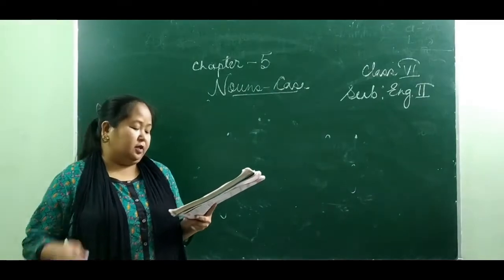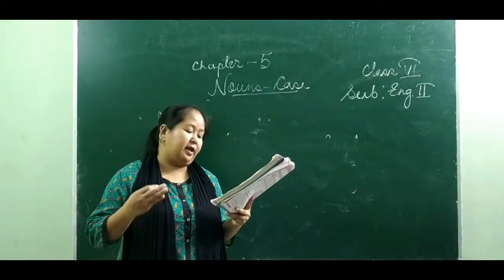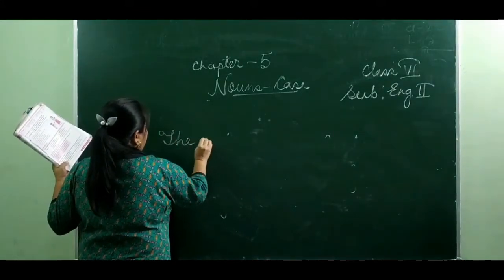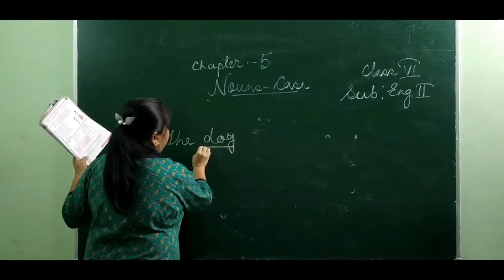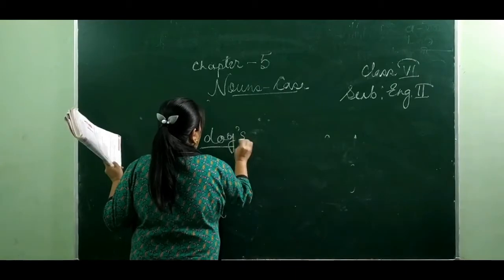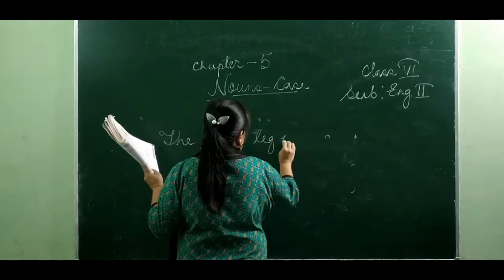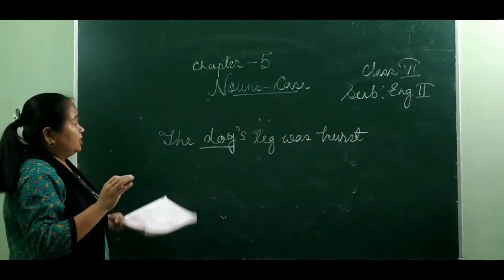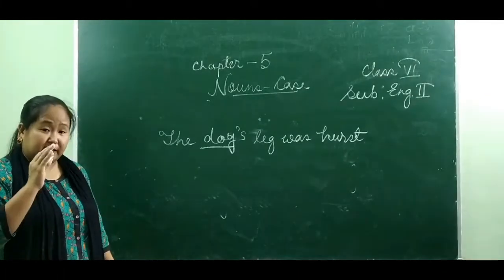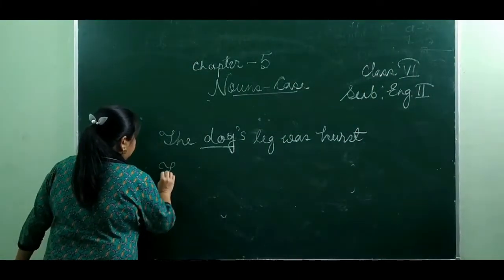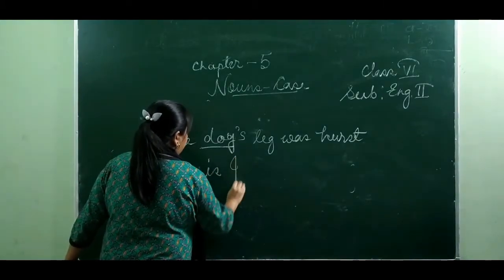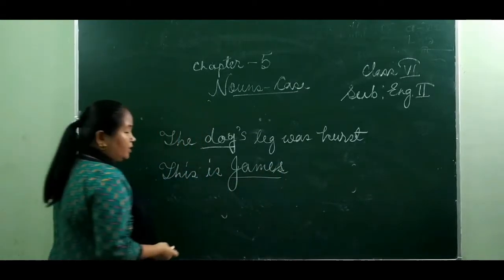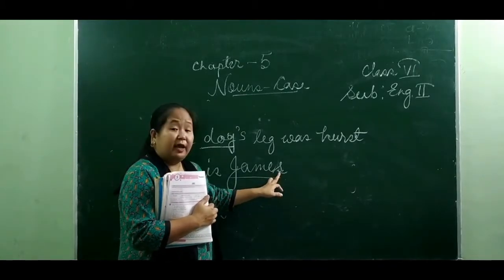Now let us learn how to form the possessive case. The possessive case of a singular noun is formed by adding an apostrophe and S to it. For example, take 'the dog' — the dog is a singular noun. So we add apostrophe and S: 'The dog's leg was hurt.' But if the singular noun ends in S, for example 'James,' James is a singular noun but ends in S.